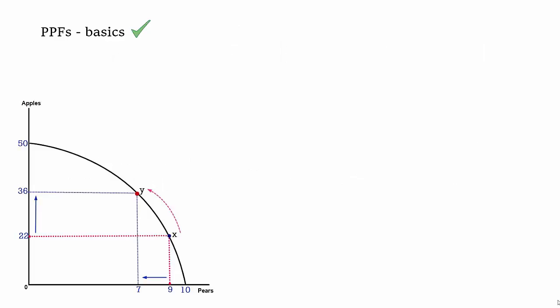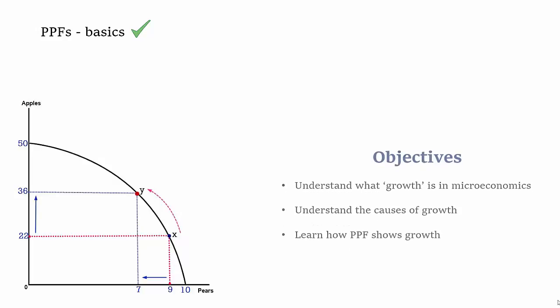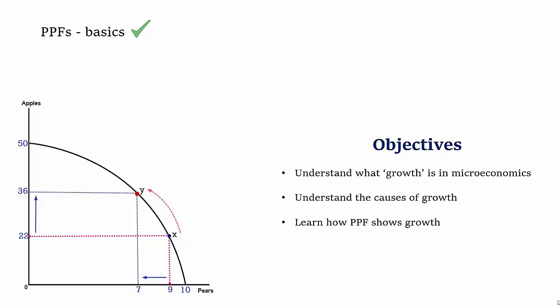In the last video we looked at the basics of PPFs, opportunity cost, how that applies to PPF and the reason why it's shaped the way it is. In this video we're going to develop PPFs further and look at the concept of growth, what that means in microeconomic terms, the causes of it and then how we can show that on a PPF. We'll also look at how you can link PPFs to other parts of the economics course, especially macroeconomics.